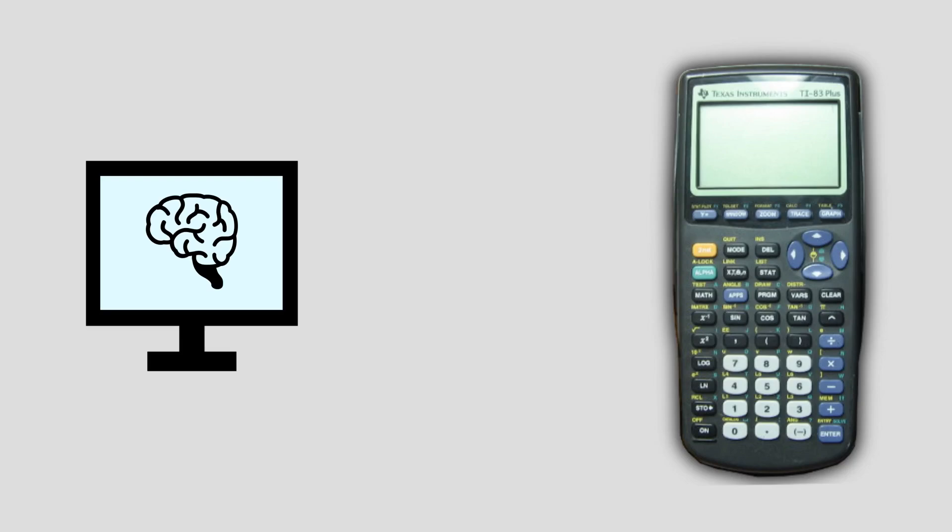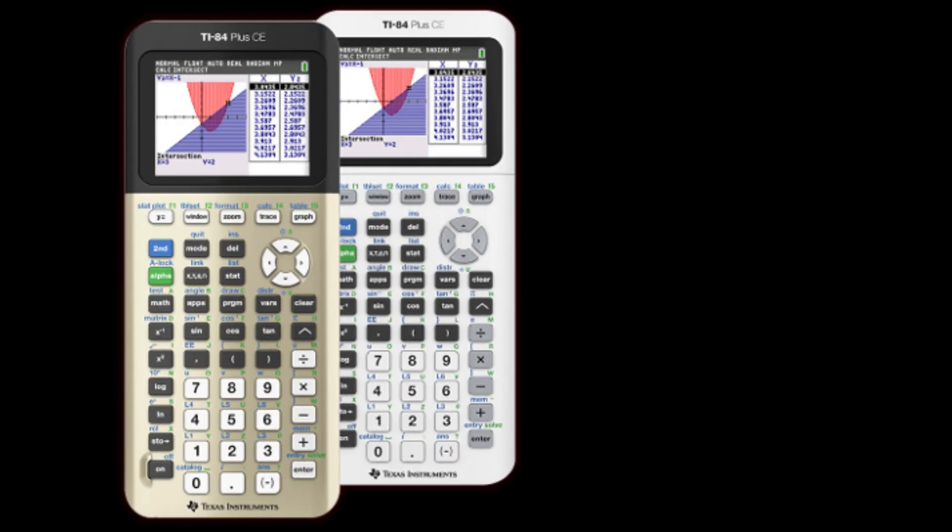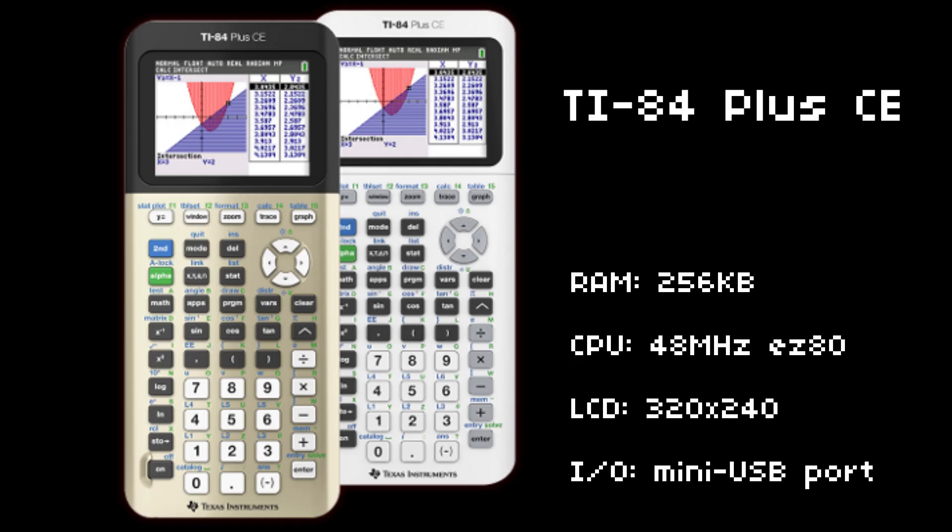Putting AI or machine learning on a calculator is actually more of a systems engineering problem than a math problem. I'm using a TI-84 Plus CE, which has only 256 kilobytes of memory and a relatively slow CPU. We're talking 48 megahertz.